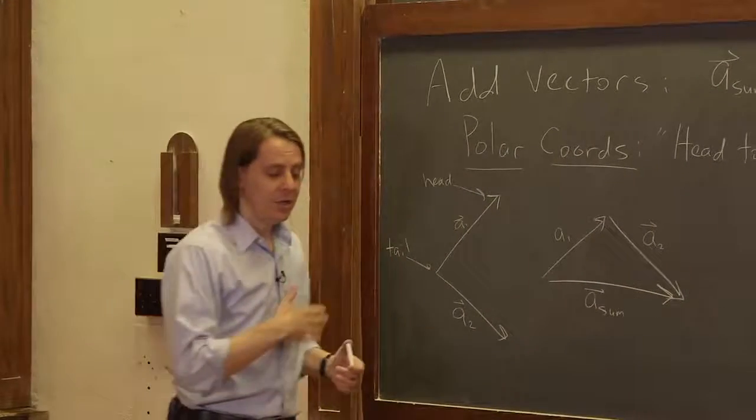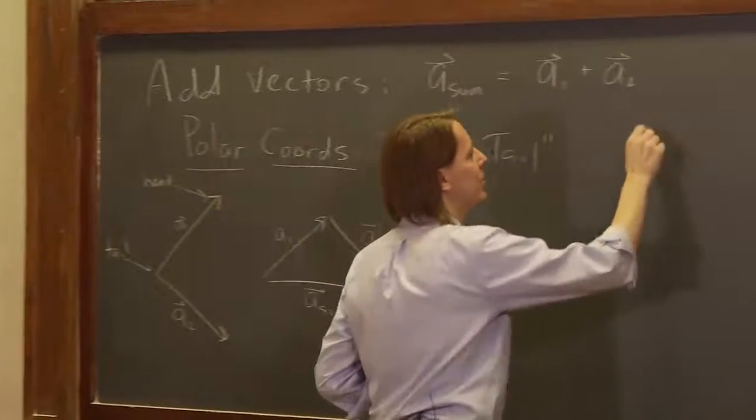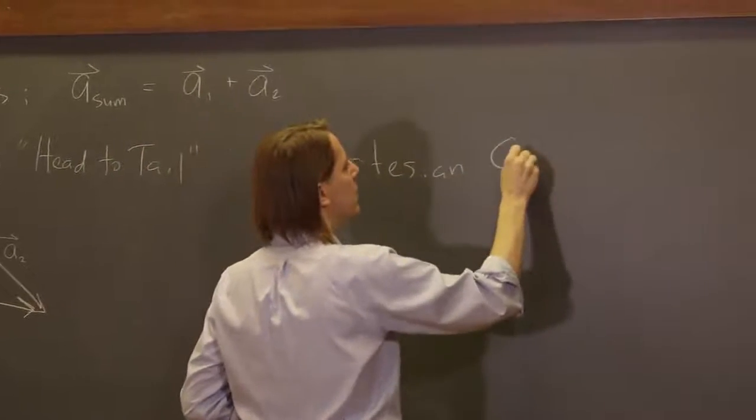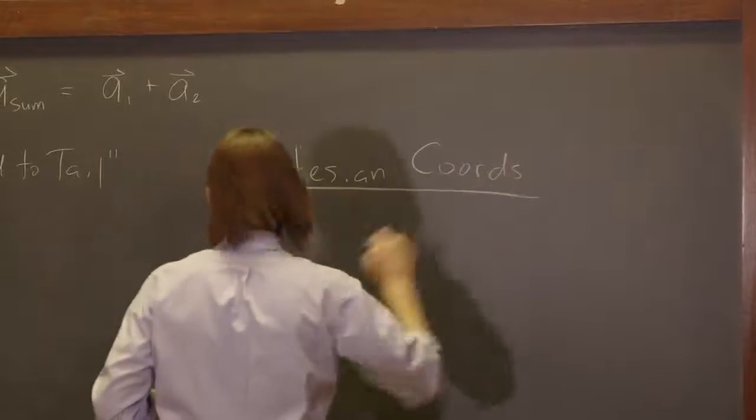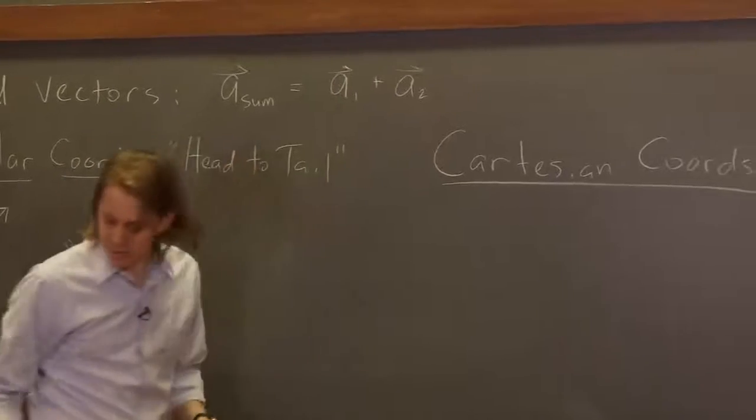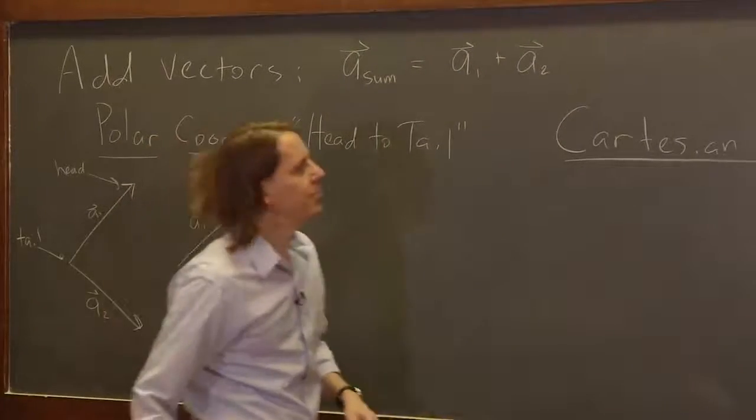If you really want to do it mathematically, you need to go to Cartesian coordinates. So let's look at how we add vectors in Cartesian coordinates. In this case, what you do is you simply add the components.